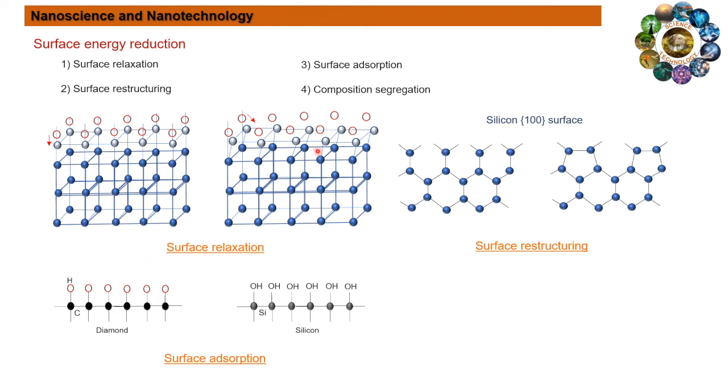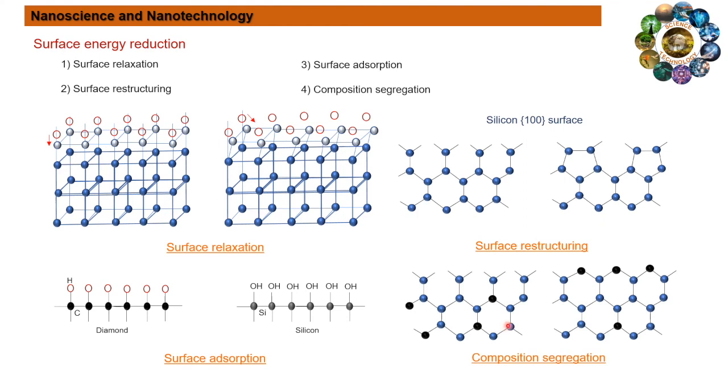Another approach to reduce the surface energy is composition segregation. In bulk crystals, composition segregation is not significant since the activation energy required for solid state diffusion is high and the diffusion distance is also large. But in case of nanostructures, the phase segregation may play a significant role in the reduction of surface energy due to short diffusion distance. In this composition segregation, the impurities and defects tend to be repelled from the interior to the surface and reduce the surface energy.